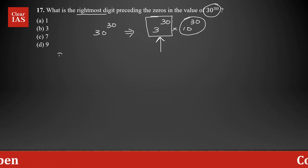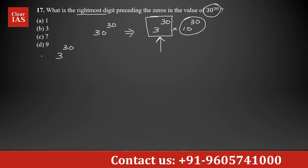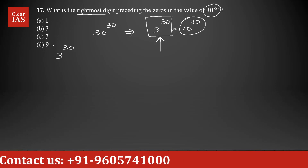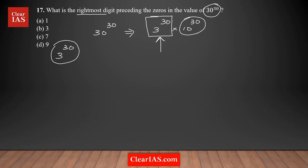How do we find the unit digit of 3^30? As discussed in the sessions, it's not practical to find the actual value of 3^30 because we don't have that much time. So we're going to use the cyclicity concept. The cyclicity of 3 is 4. To understand cyclicity, we find a pattern in the unit digits of the powers of 3.